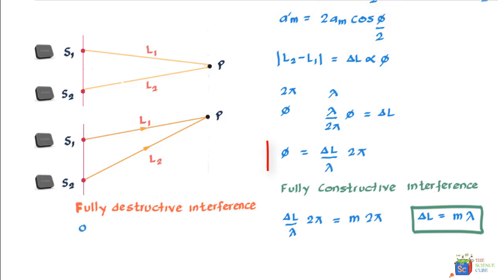φ, or (ΔL/λ) × 2π, should equal (2m + 1)π. If you simplify this, π cancels off, and if you bring 2 down, you'll find ΔL = (m + 1/2)λ.